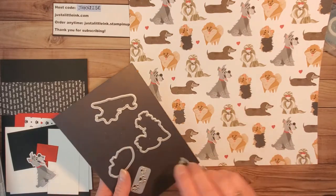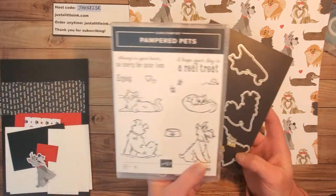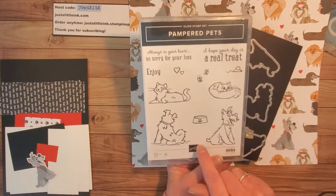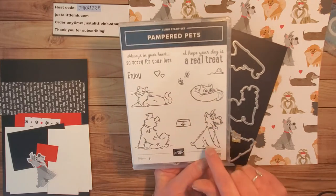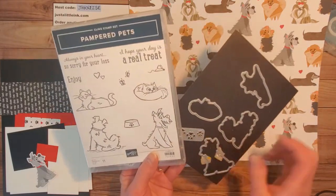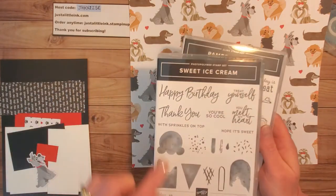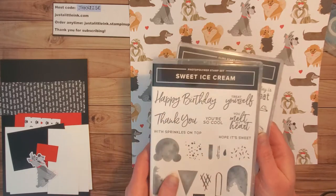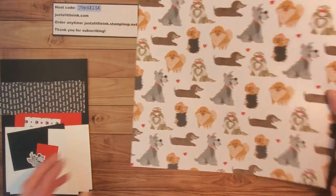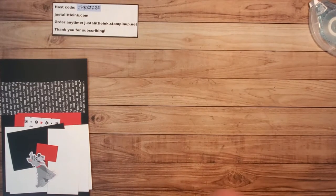You'll have to fussy cut all the others but the dies coordinate with the Pampered Pets stamp set so they will cut out these other bigger images as well as a couple little paw prints. I'm also going to be using the sweet ice cream stamp set because I love the happy birthday. So let me tell you about all the other measurements for the card.